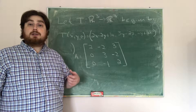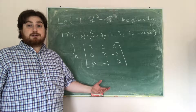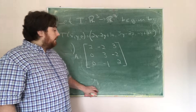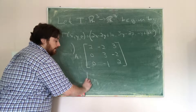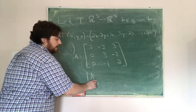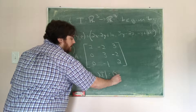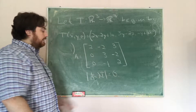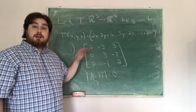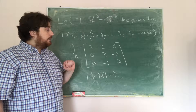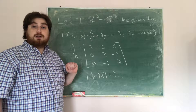So the next thing we need to do is find the eigenvalues so that we can then find the eigenvectors. To find the eigenvalues, what we want to do is solve for where the characteristic polynomial — which is the determinant of A minus λI — equals 0. So we're going to take A minus λ times the identity matrix and then find the determinant.